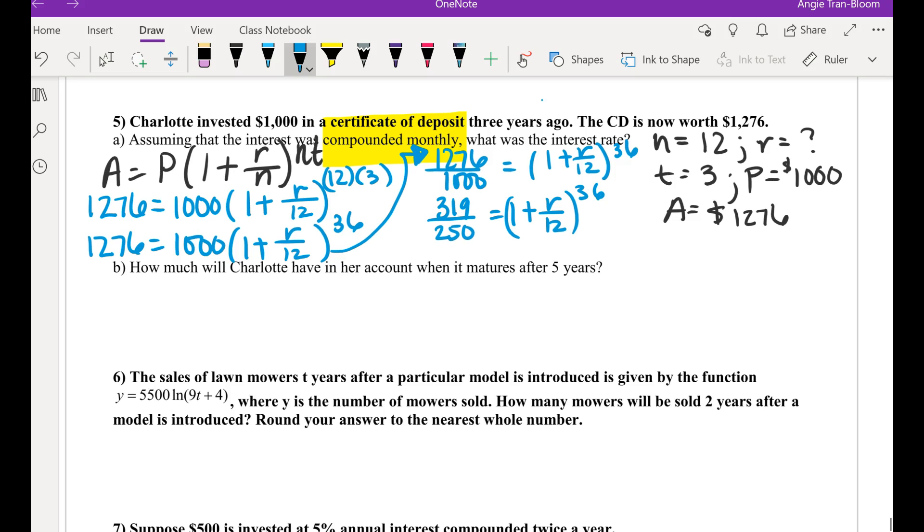So, Nicol, what's 12 times 3? 36. Good. Okay, so that's really 1,000 times 1 plus R divided by 12 to the 36th power. What do you think we need to do next in order for us to solve for the rate? Divide by 1,000. Remember, we have to isolate that base. Okay, so 1,276 divided by 1,000. I want it in fractions.